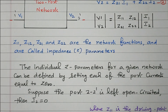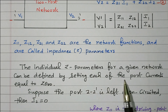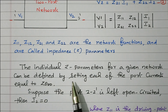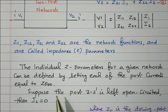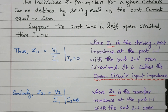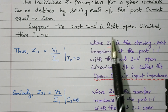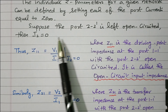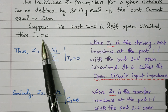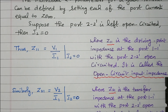Now we will see the details about the impedance parameters. The individual Z parameter for a given network can be defined by setting each of the port currents equal to zero. First, making the output current zero, then making the input current zero, we can define these impedance parameters. Suppose the output port 2-2' is left open-circuited, so I2 equals zero. With I2 equal to zero, we can define Z11 and Z21.